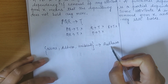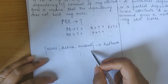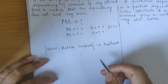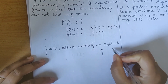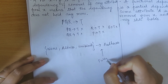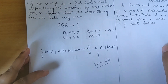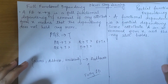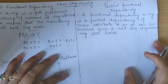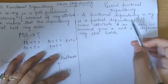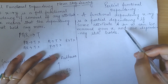So only when I have the combination — name, address, and unique biometric ID together — will I be able to give the Aadhaar number. If I remove any attribute from the determinant side, this dependency will not hold. So here we can say that Aadhaar number is fully functionally dependent on name, address, and unique biometric ID. This kind of dependency is a full functional dependency.